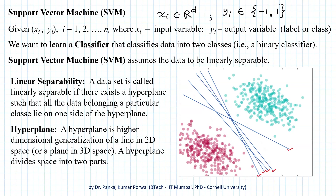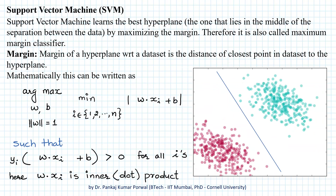However, if our data is linearly separable, there will be infinitely many such lines or hyperplanes that partition the data. So which hyperplane should we select? SVM helps us identify the best hyperplane — the one that lies in the middle of the separation between the data by maximizing the margin. That is why it is also called a maximum margin classifier. The margin of a hyperplane is the distance of the closest point in the dataset to the hyperplane.